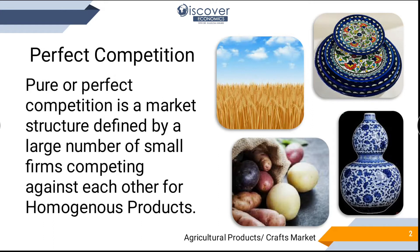Perfect competition involves homogeneous products. As I told in my previous lecture, if I ask 10 farmers to bring their wheat grains and mix them all in one pot, they would not be able to identify which grain came from their field. So perfect competition involves homogeneous products like potatoes, carrots — we can't identify who the producer is.